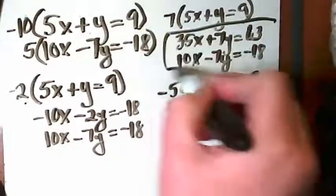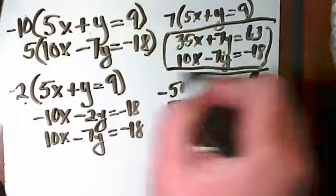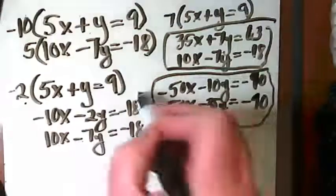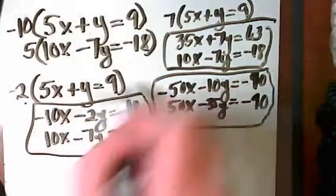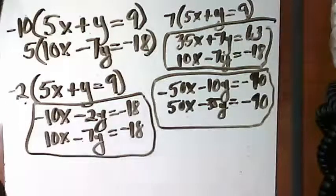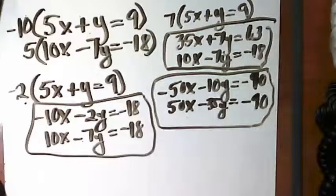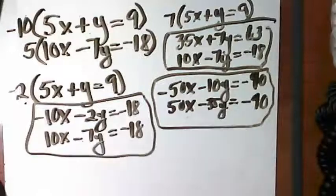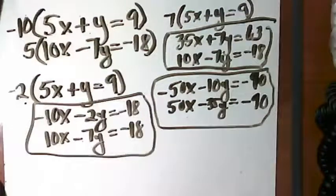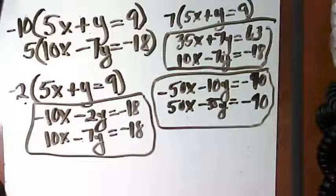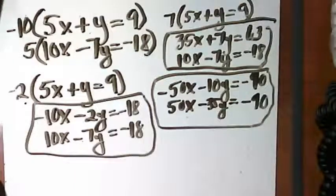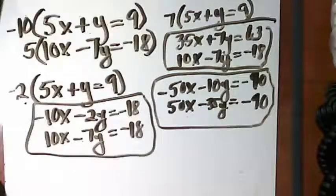All three of these are taking those first two equations and changing something so that I can eliminate. All of them are right ways to start the problem. We're going to end up with the same x, y at the end, no matter which one we start with. Which one do you want me to go further? Should we do that crazy 50 and 50?